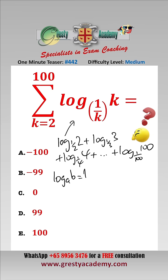That is, log to the base a of b equals log to the base c of b over log to the base c of a.